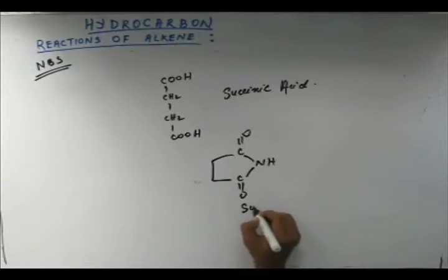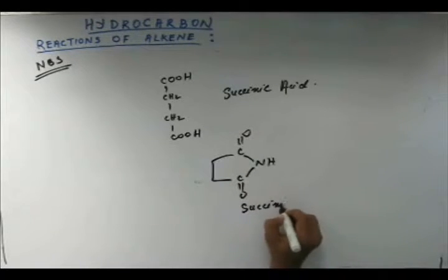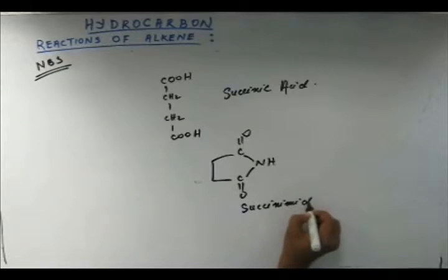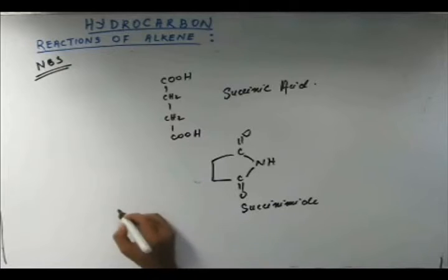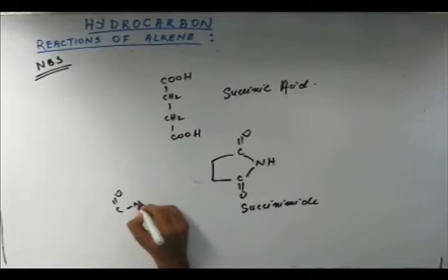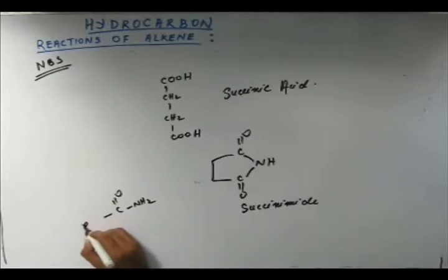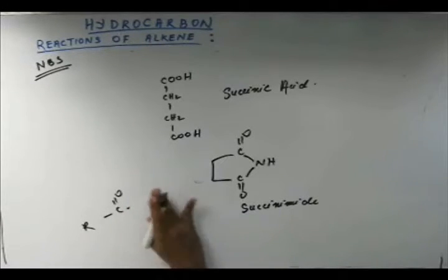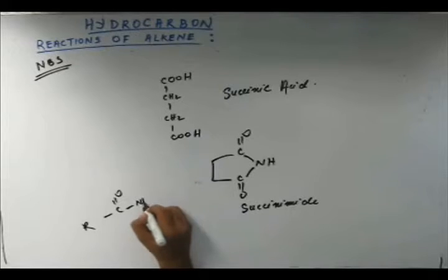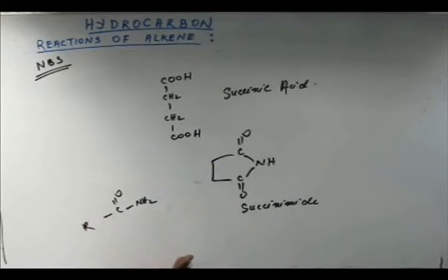So this is succinimide. When we get an amide, you know what amide is. This group is called amide whatever this R is. Because previously there was an OH here, this was a carboxylic acid. When you remove that OH and when you got an NH2 instead of that OH, that is amide. When you have a dicarboxylic acid we get a cyclic amide like this. So nevertheless this is amide. Out of succinic acid this is succinimide.